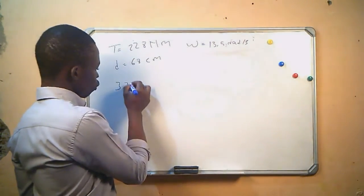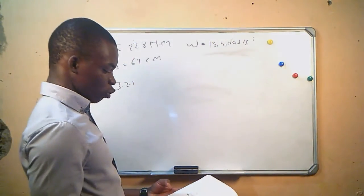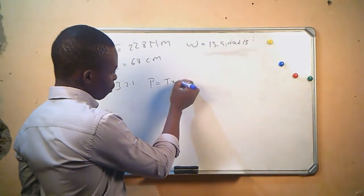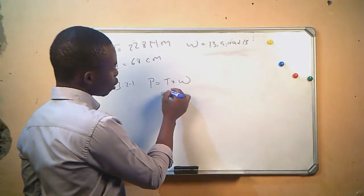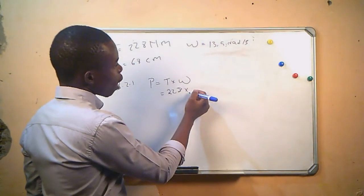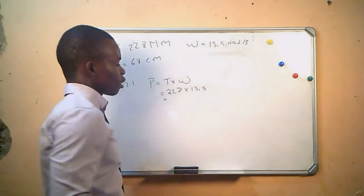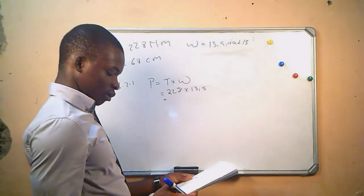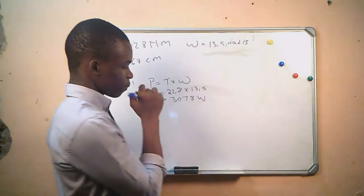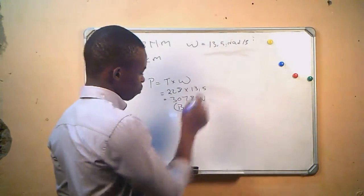Question 3.2.1 asks for the power exerted. We use the formula: power equals torque T times angular velocity omega. Our torque is 228 and our angular velocity is 13.5, giving a power of 3078 watts. This corresponds to answer B.